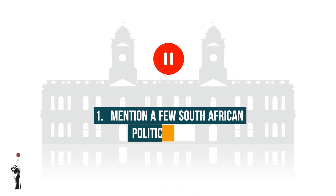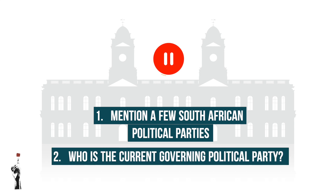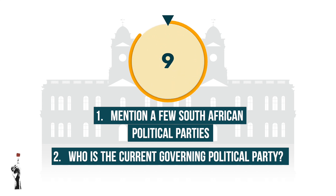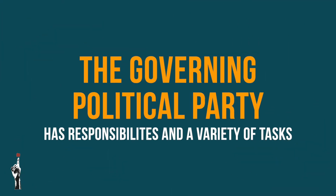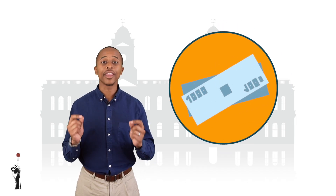South Africa has many different political parties. Can you name a few, and also mention the political party that currently governs South Africa? When a political party wins the election, they have to govern the country and make sure they keep to the promises made during the election campaign. They have the responsibility to perform a variety of tasks, and these tasks cannot be performed without the necessary resources and money.